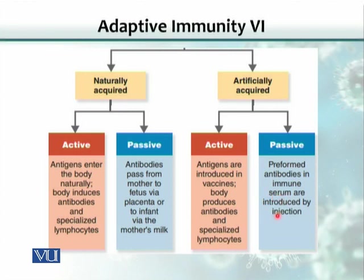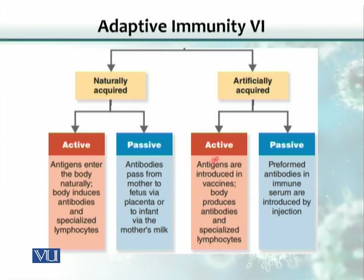The person who was bitten by the snake acquired preformed antibodies made elsewhere — this is also a passive process. So there are two subclasses: naturally acquired and artificially acquired, and both have active and passive parts.